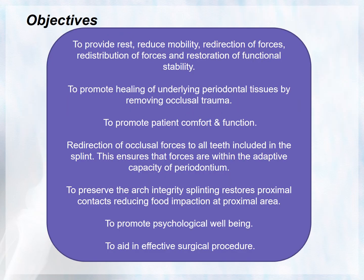The objectives of periodontal splinting are: to provide rest, reduce mobility, redirect and redistribute forces, restore function and stability, promote healing of underlying periodontal tissues by removing occlusal trauma, promote patient comfort and function, redirect occlusal forces of all teeth included in the splint ensuring forces are within the adaptive capacity of the periodontium, preserve arch integrity, restore proximal contacts to reduce food impaction, ensure adequate space for dental floss or interdental brush, promote psychological well-being, and aid in effective surgical procedures.